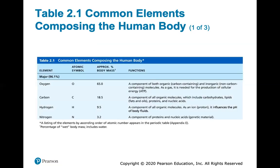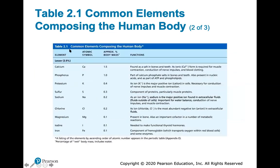Here are the common elements that compose the human body. Oxygen makes up about 65% of our mass. Then carbon, hydrogen, and nitrogen are the four most common elements. You can read about the functions and where these most common components are found in the body. Here are more common elements — the lesser-known ones making up less than 4% — with their element name, atomic symbol, and where they're found in the body. Feel free to pause the video to read those functions.